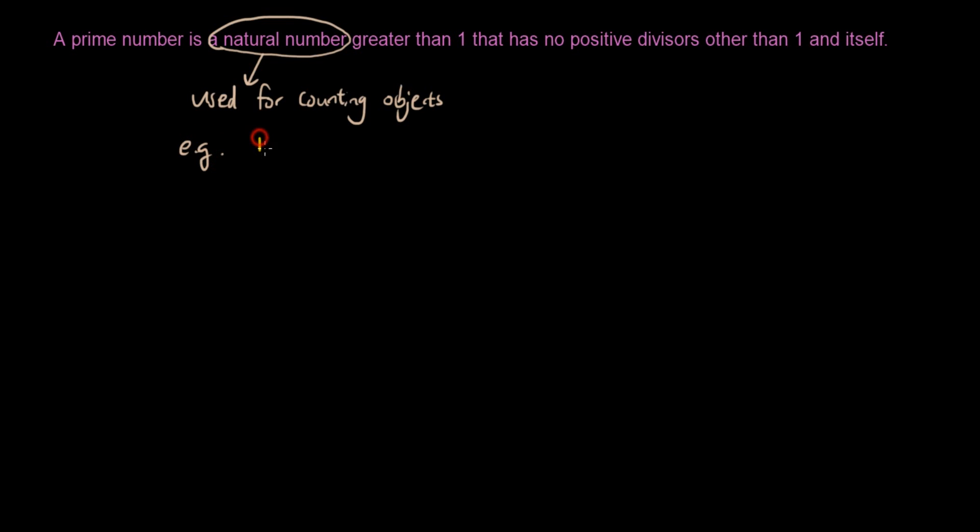So for example, 1, 2, 3, 4, 5. You use these numbers to count things. Natural numbers do not include decimal numbers such as 0.25. So you're not allowed part of a number.